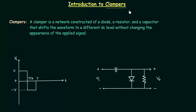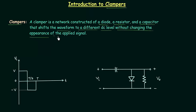We can also define clampers as a circuit that places either the positive or negative peak of the input signal at a desired DC level, or simply, a circuit which shifts the DC level is known as a clamper. A more formal definition: a clamper is a network constructed of a diode, a resistor, and a capacitor that shifts the waveform to a different DC level without changing the appearance of the applied signal.